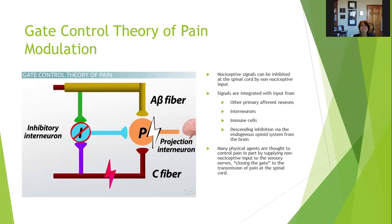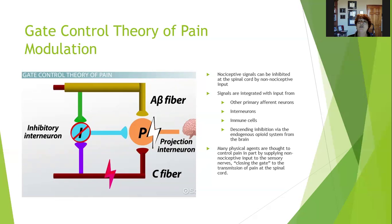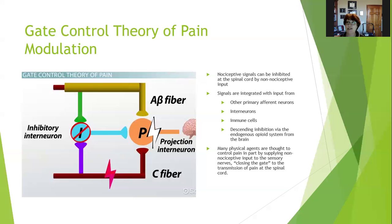In gate control theory, nociceptive signals are inhibited at the spinal cord by non-nociceptive input. Signals are integrated with input from other primary afferent neurons, interneurons, immune cells, and descending inhibition via the endogenous opioid system from the brain. Many physical agents are thought to control pain in part by supplying non-nociceptive input to sensory nerves, closing the gate to transmission of pain at the spinal cord. For example, soft tissue mobilization provides sensory input that gives non-nociceptive inhibitory input to close the gate. Ice, heat, or even being in water stimulates a lot of sensory nerves and can have this effect.